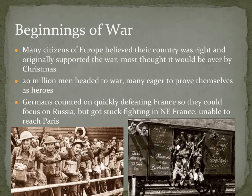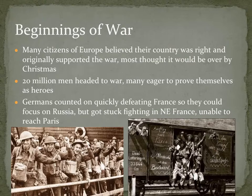At the beginning of the war, people were pretty optimistic. Most Europeans believed their country was in the right and thought it would be a quick war. In 1914, 20 million men headed off to war in a fairly optimistic mood. The Germans counted on quickly defeating France so they could return and focus on Russia in the east — but that did not play out. They got stuck fighting in northeastern France, unable to reach Paris, and were now fighting a true two-front war, which is what they had hoped to avoid with the Schlieffen Plan.